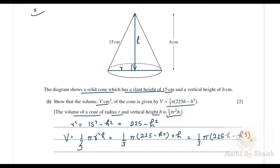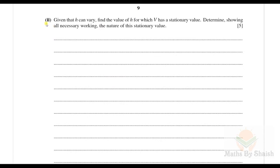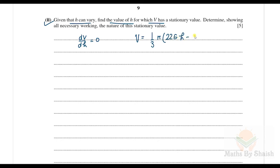Now for part two: given that h can vary, find the value of h for which V is stationary. For a stationary value we need dV/dh = 0. V is given as (1/3)π(225h − h³), so we differentiate with respect to h.